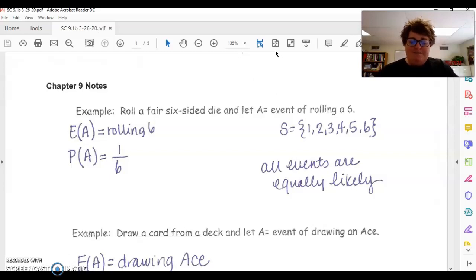So kind of as an extension, we talked about just to find the probability of something you have your sample space, which is all of your options, and then you have your event. So in this case, for the first example, your event is rolling a 6. And then finding the probability of that event. So how many times can that event happen out of your total?